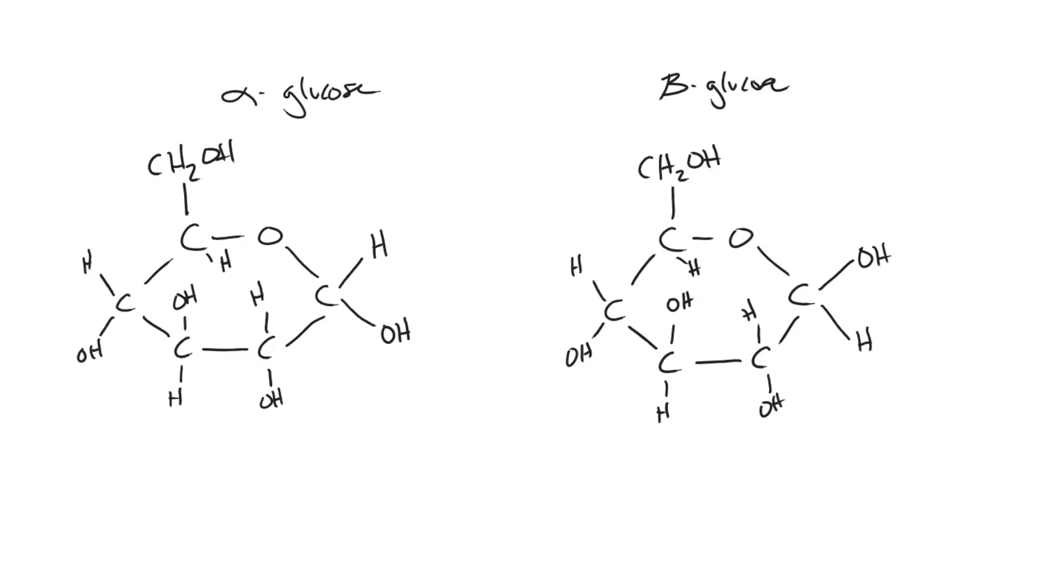is the orientation of the hydrogen and hydroxide on this first carbon. Hydroxide on the top on beta glucose, hydroxide on the bottom on alpha glucose.